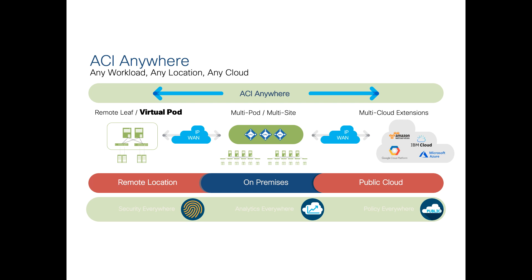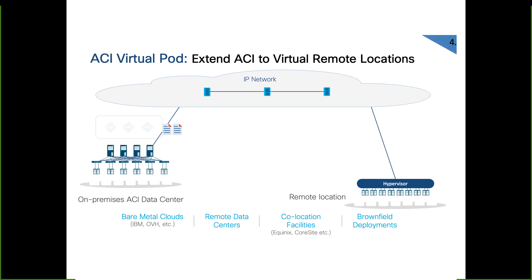There are two different items on the private cloud that you can extend your ACI to: one is the remote leaf and the other is the virtual pod. On the public side, you can extend it to the cloud — for instance, AWS and Azure, with GCP, IBM Cloud, and more coming. Virtual pod is basically a way of extending ACI fabric through an IP cloud and having a virtual pod on the other side. Keep in mind this is virtual, meaning on the other side you don't actually have real spines and real leaves.